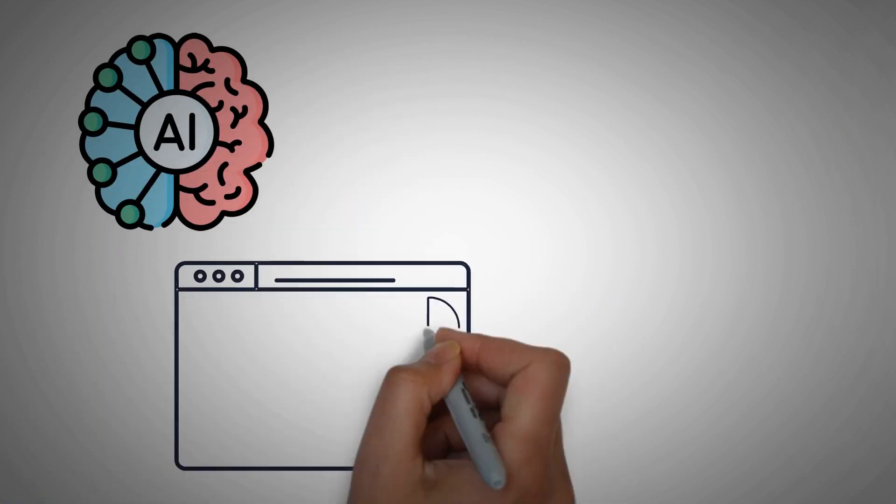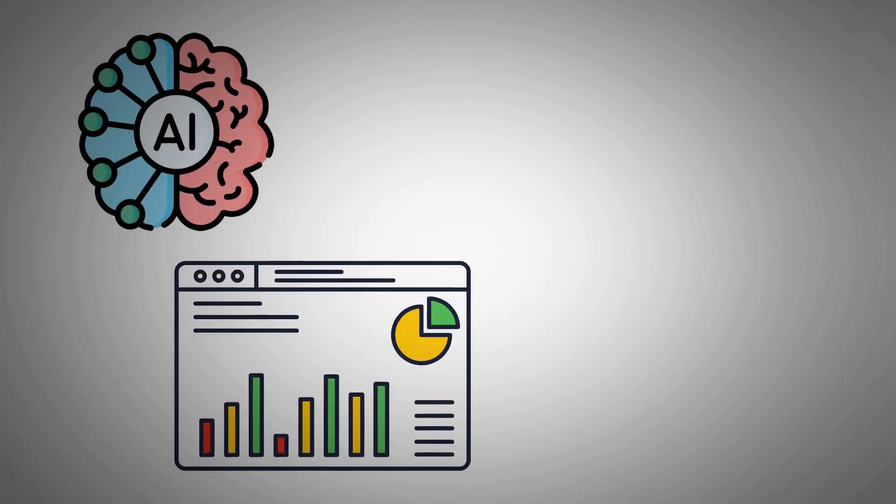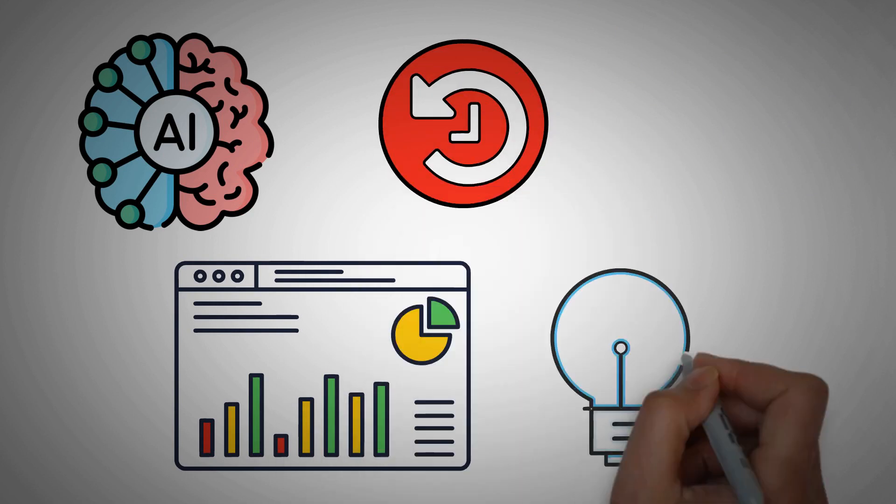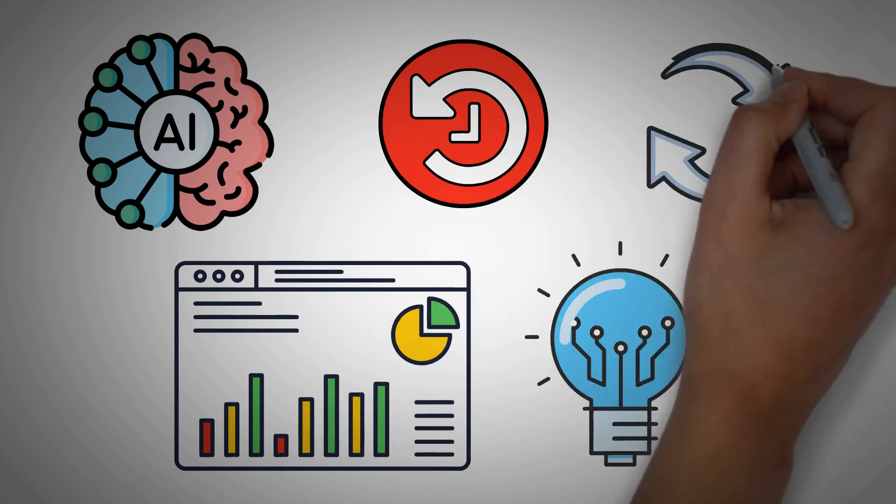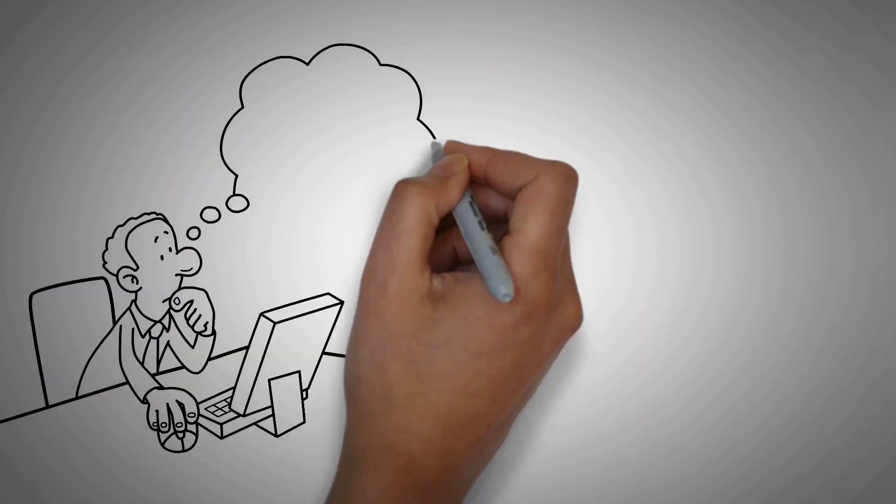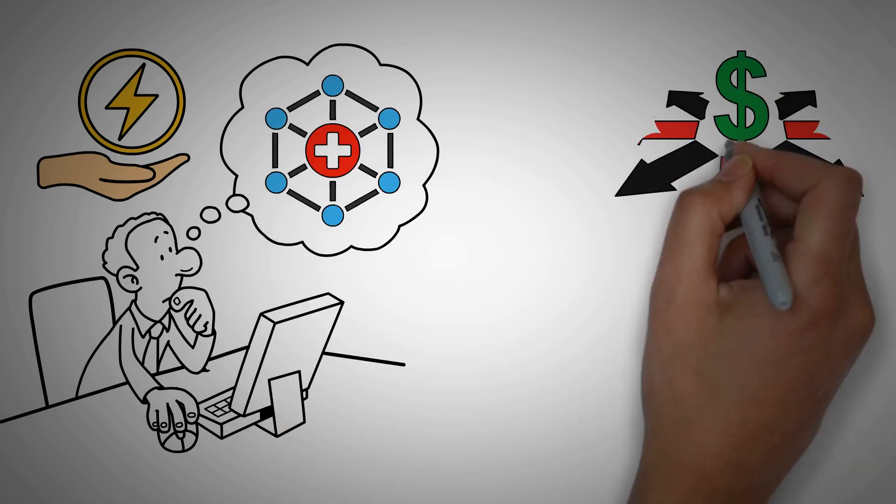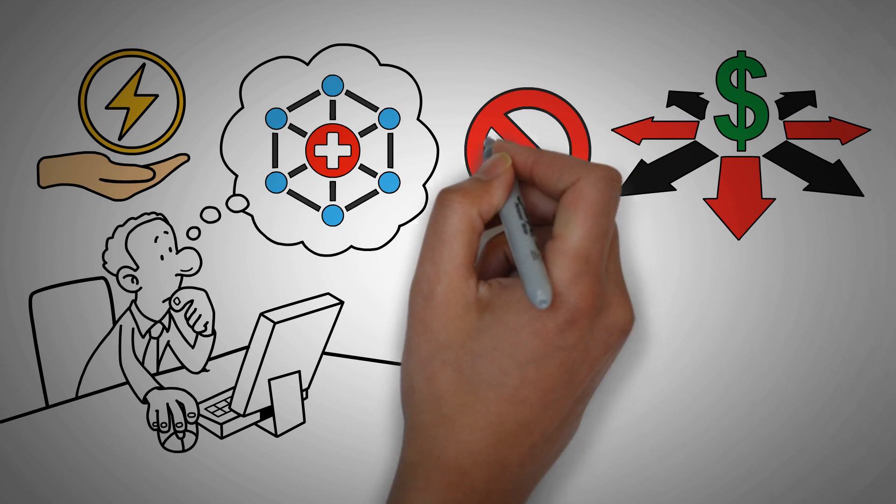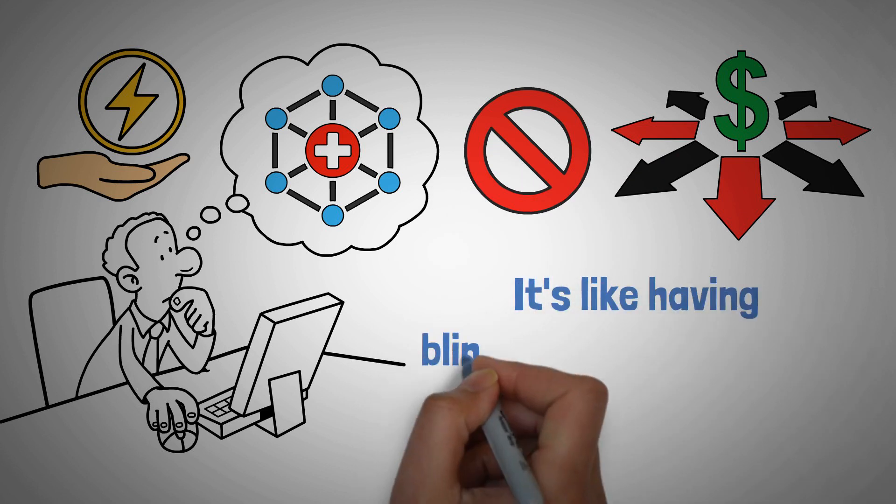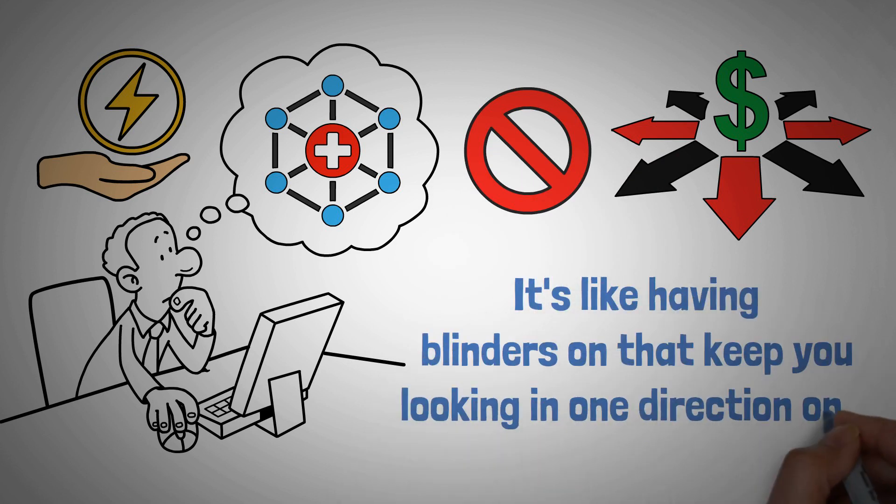For instance, let's say you've got an AI tool that helps you with stock investments. It looks at your past choices. Maybe you've had a good run with tech stocks, so it keeps suggesting more of the same. But what about other sectors like renewable energy or health care? You might be missing out on some great opportunities because the AI is not showing them to you. It's like having blinders on that keep you looking in one direction only.